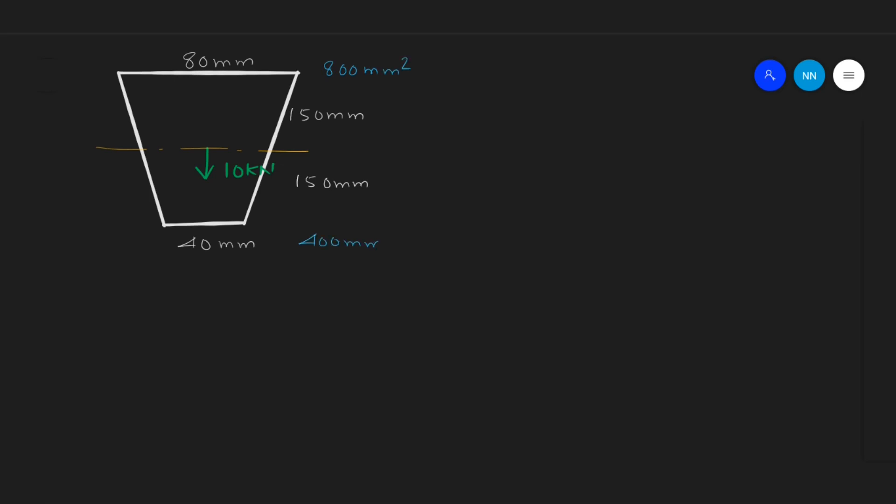In the problem it is clearly mentioned that we have to discretize the whole beam into two elements. So we have to form two different finite element equations and assemble the finite element equation. The finite element expression EA/L is individual for each element, so we have a unique individual area of cross-section for each element. In this case both elements may have a varying cross-section, so first we need to find the individual area of cross-section for each element.